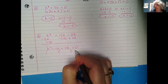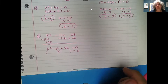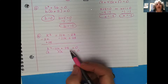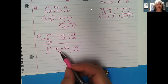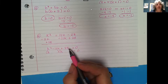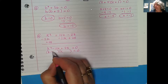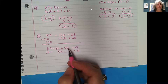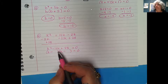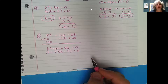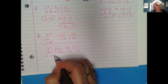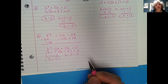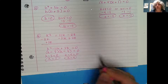Factoring k squared as k and k, we need two numbers that multiply to give 28 and add to give negative 11. Both must be negative to get a positive product but a negative sum. Seven and four work: they multiply to give 28 and add to give 11, so with negatives we get (k minus 7)(k minus 4) equals zero. Setting each equal to zero and solving: add 7 to both sides for k equals 7, and add 4 to both sides for k equals 4.